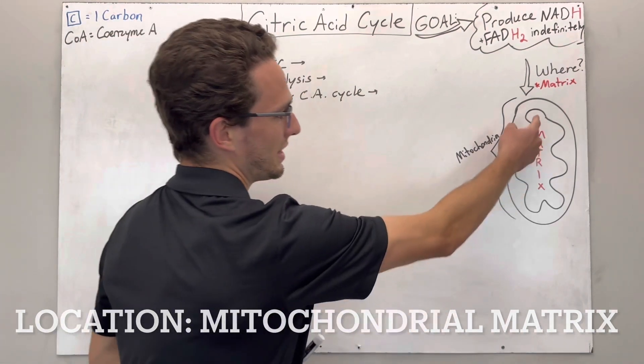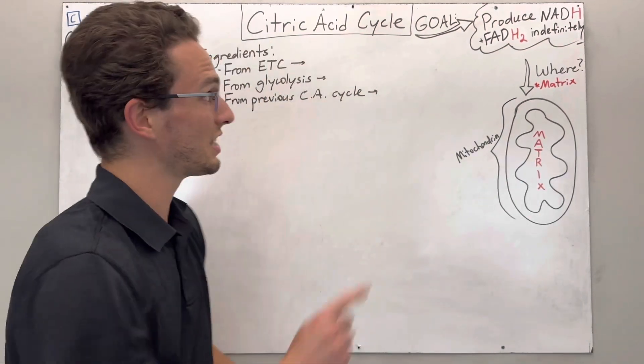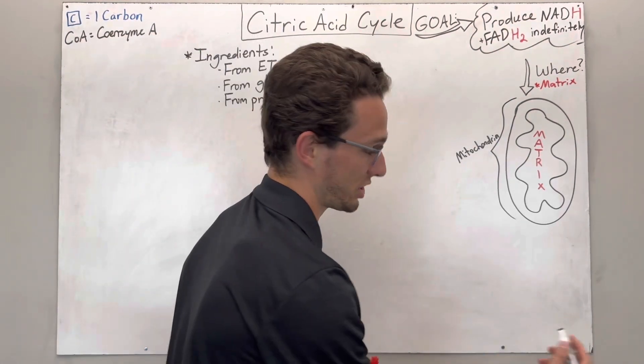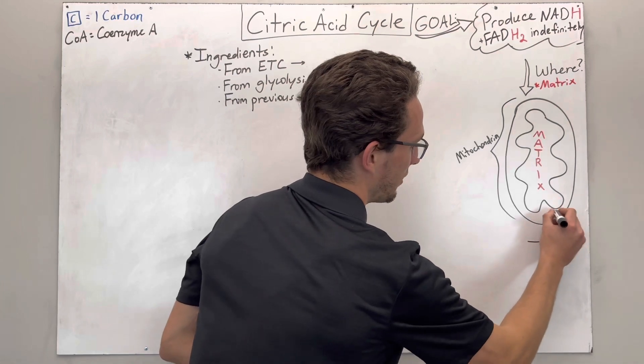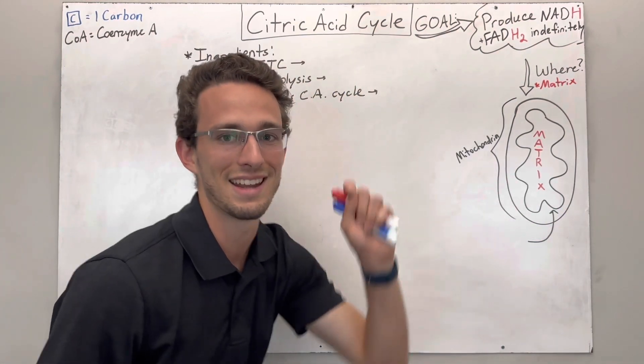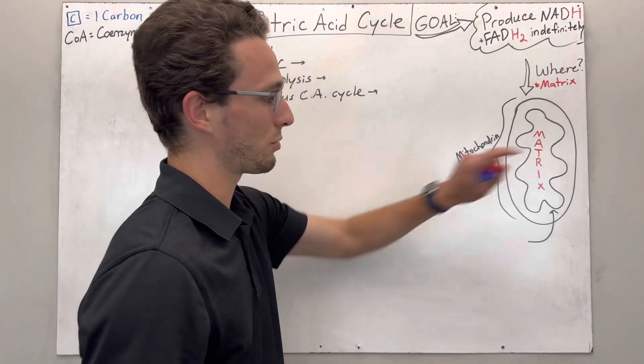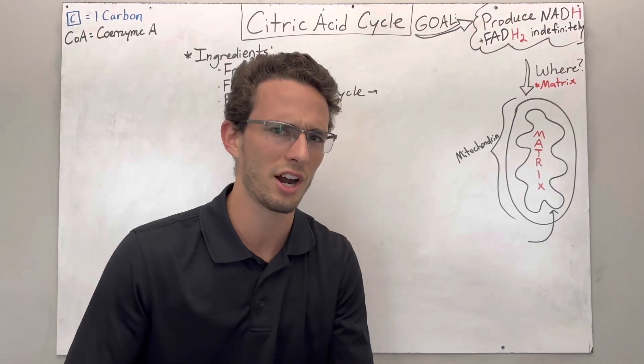So we need to make these molecules. And where are we making them? In the matrix of the mitochondria, the powerhouse of the cell. We are making them in the matrix. And what's nice about this is these two intermediates are going to go directly into the electron transport chain, which I've talked about, which is going to be in this inner membrane right next to it. Location matters a lot.